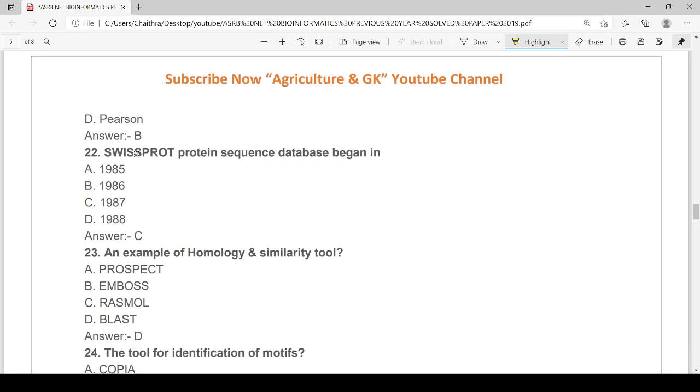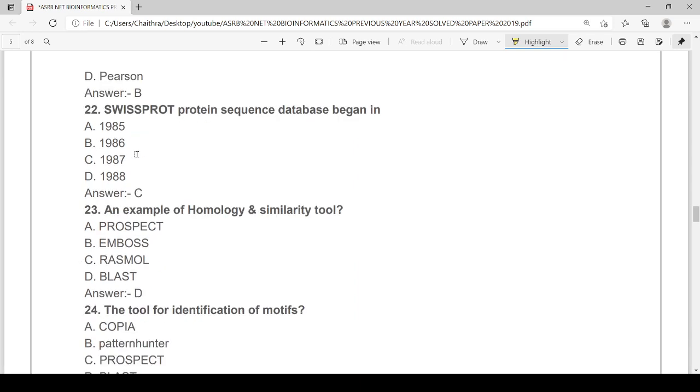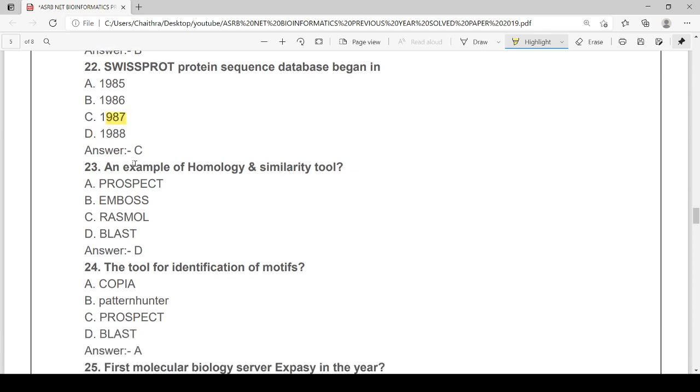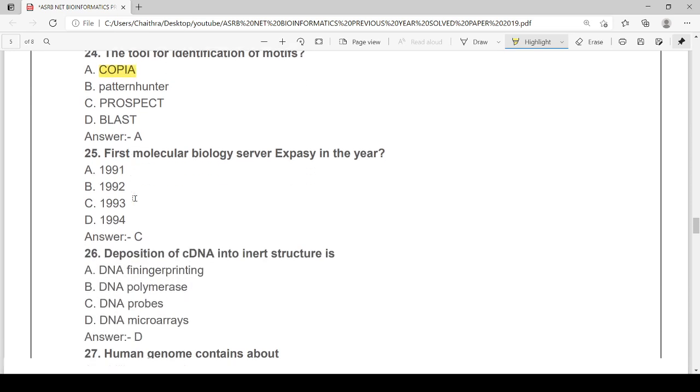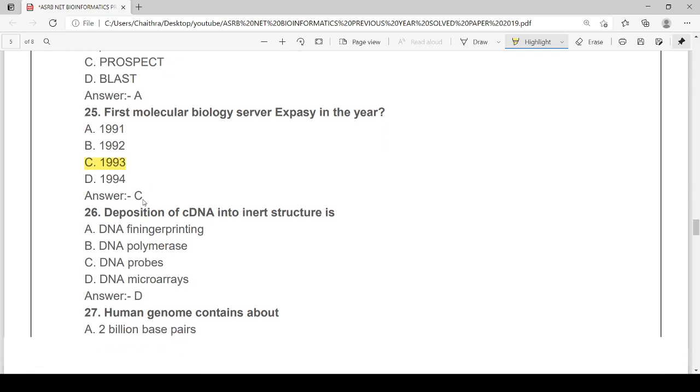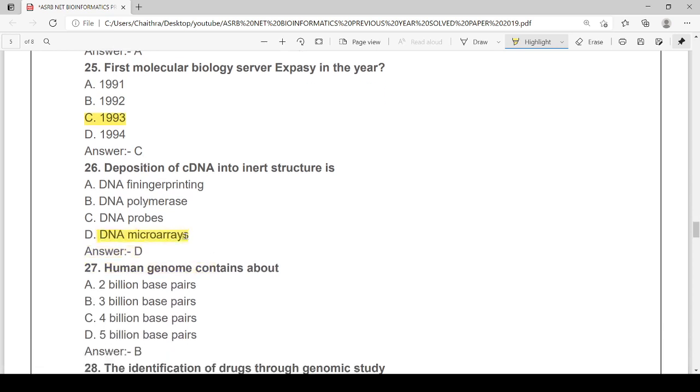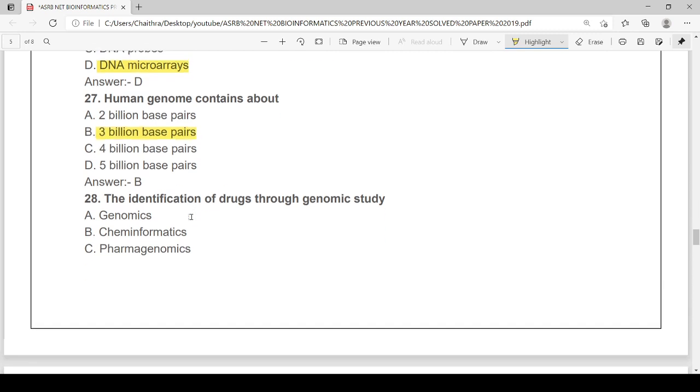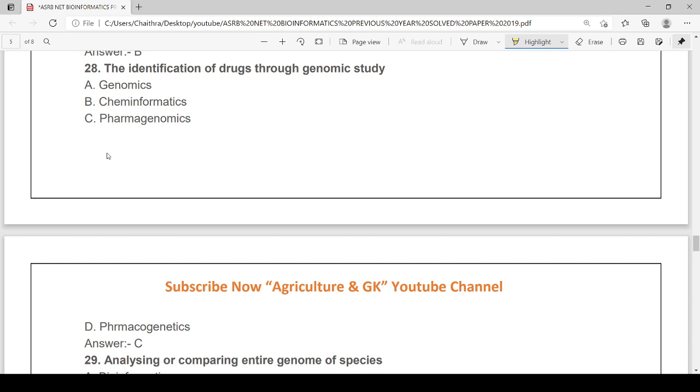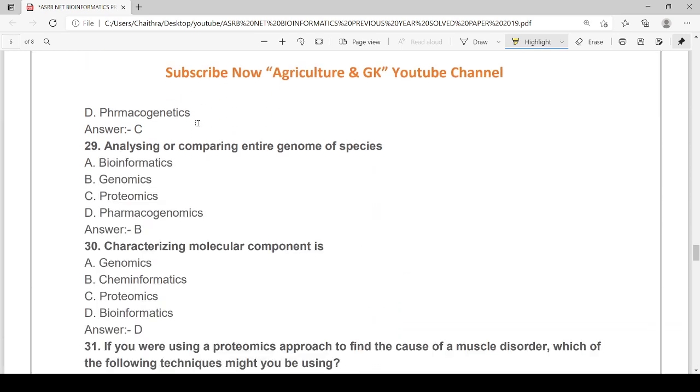Swiss-Prot protein sequence database, S-W-I-S-S-P-R-O-T, protein sequence database began in 1987. An example of homology and similarity tool is BLAST. The tool for identification of motifs is COPIA. The first molecular biology server EXPASY in the year started in 1993. Deposition of cDNA into inert structure is DNA microarrays. Human genome contains 3 billion base pairs. Identification of drugs through genomic study is pharmacogenomics. Analysis or comparing entire genome of the species, that branch is called genomics.